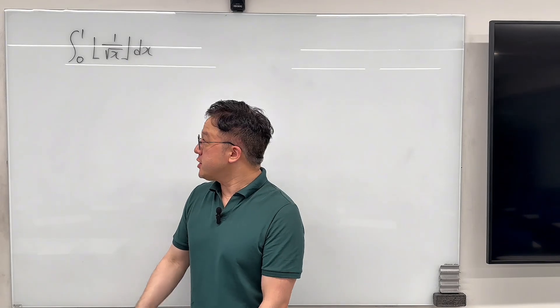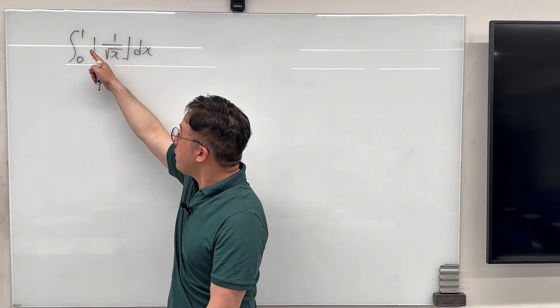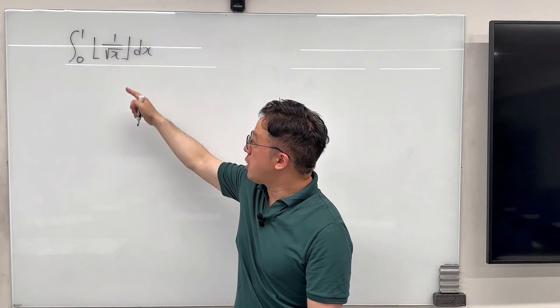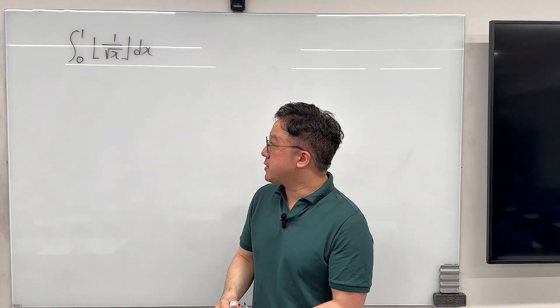Okay, here's the question. Evaluate this integral from 0 to 1 of the floor function of 1 over square root of x, dx.